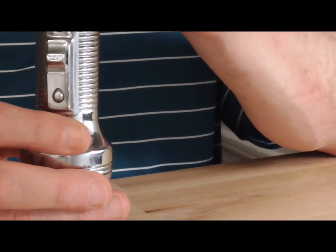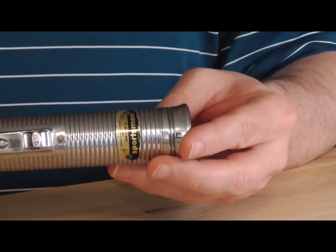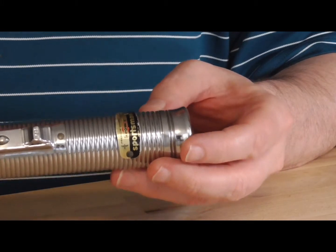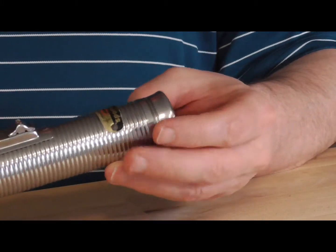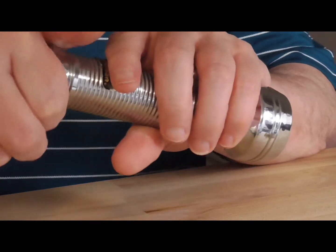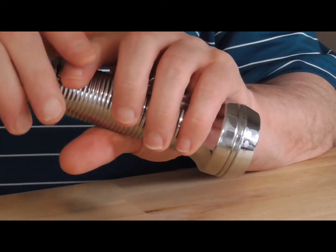The Rayovac Sportsman flashlight. My grandmother had a flashlight just like this. Mine happens to use two C cell batteries but my grandmother's used three D cells.